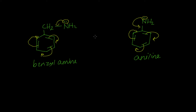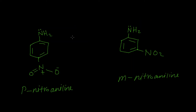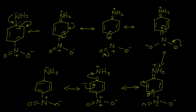So benzylamine is more basic than aniline. In our final comparison between para-nitroaniline and meta-nitroaniline: in para-nitroaniline, the lone pair of electrons on the amine group can participate in the resonance of the compound. The lone pair forms a double bond, generating a positive charge on the nitrogen; this negative charge then forms a double bond that moves toward the nitro group, and so on. There are many resonating structures, which decreases the electron density on nitrogen, making it only slightly basic.